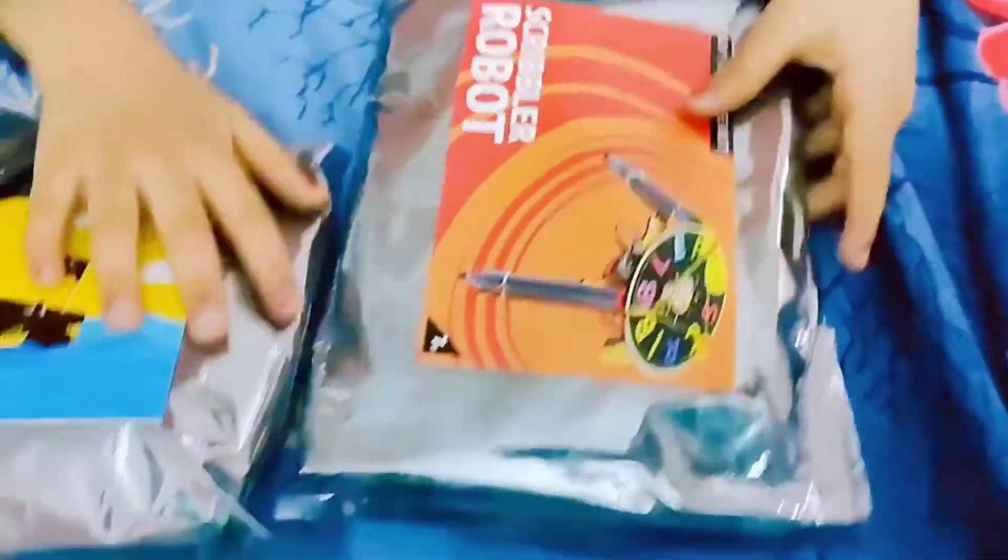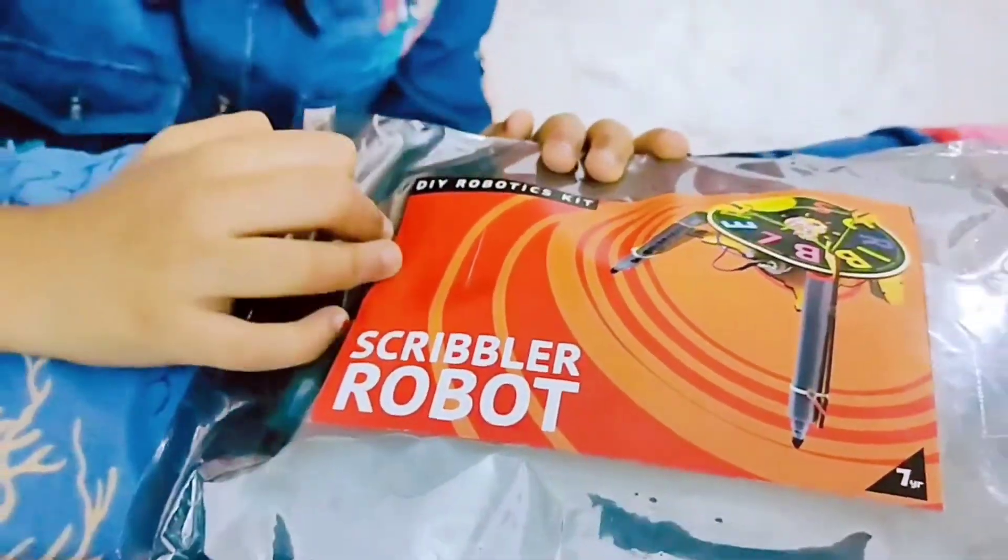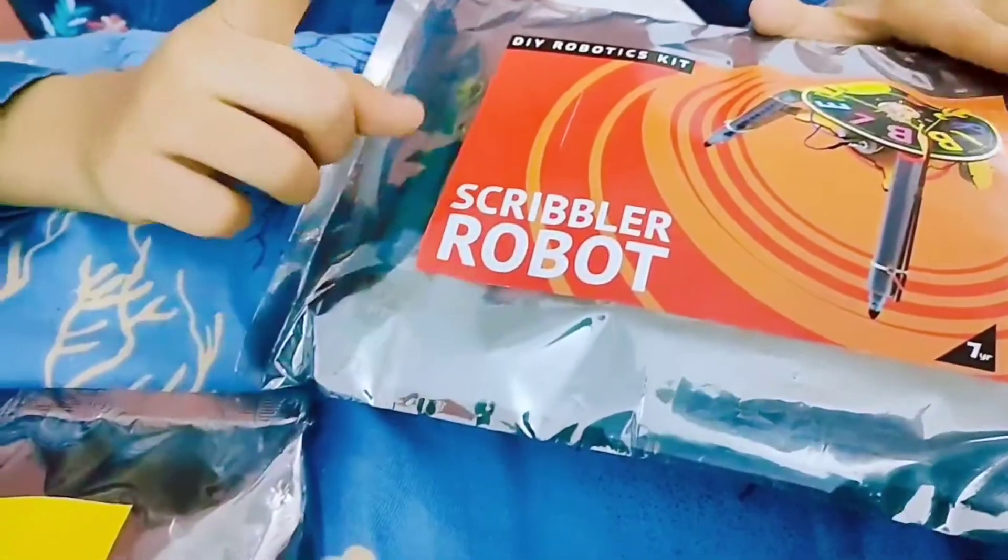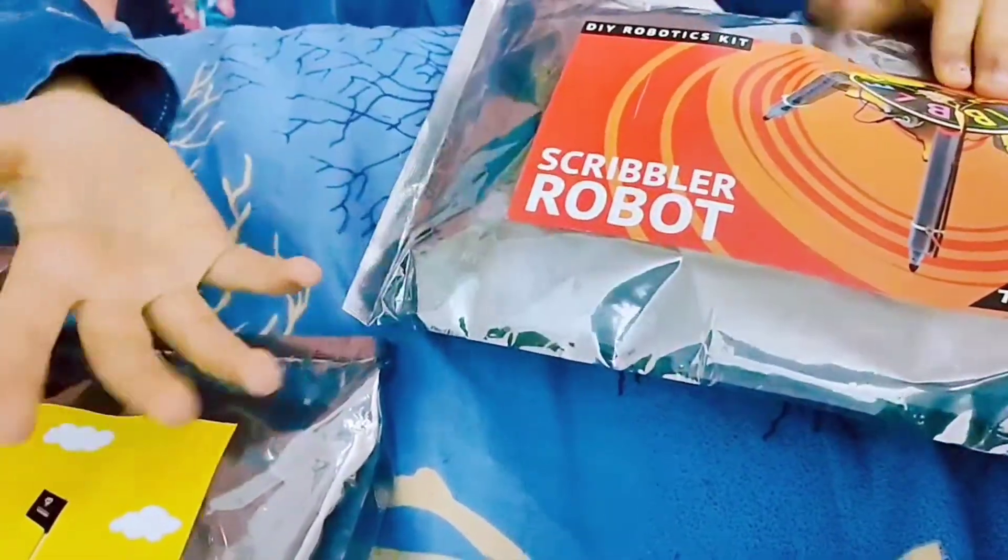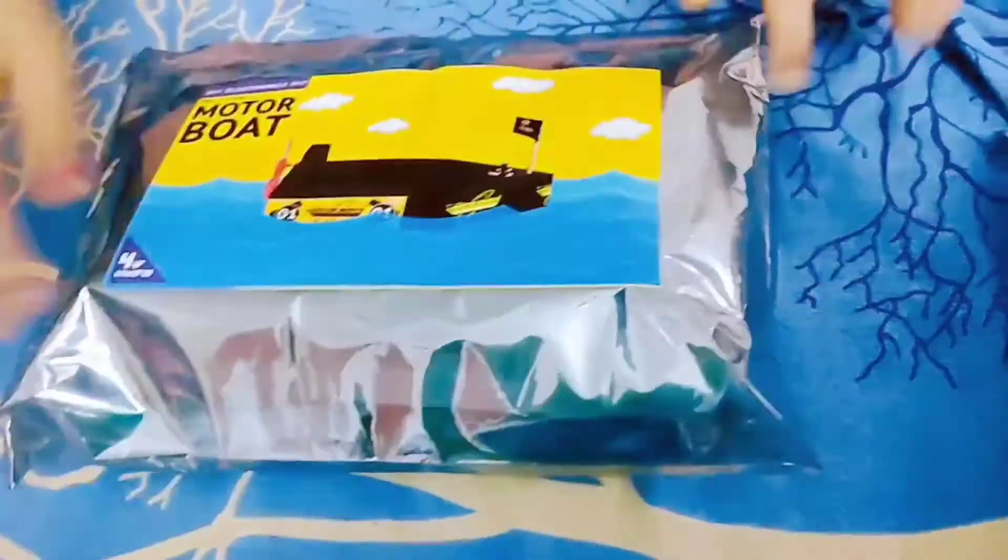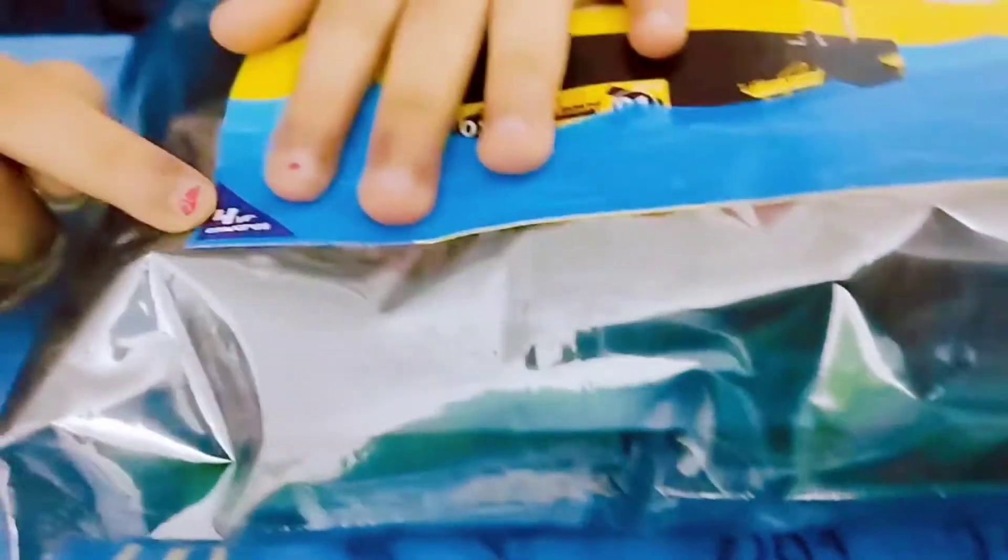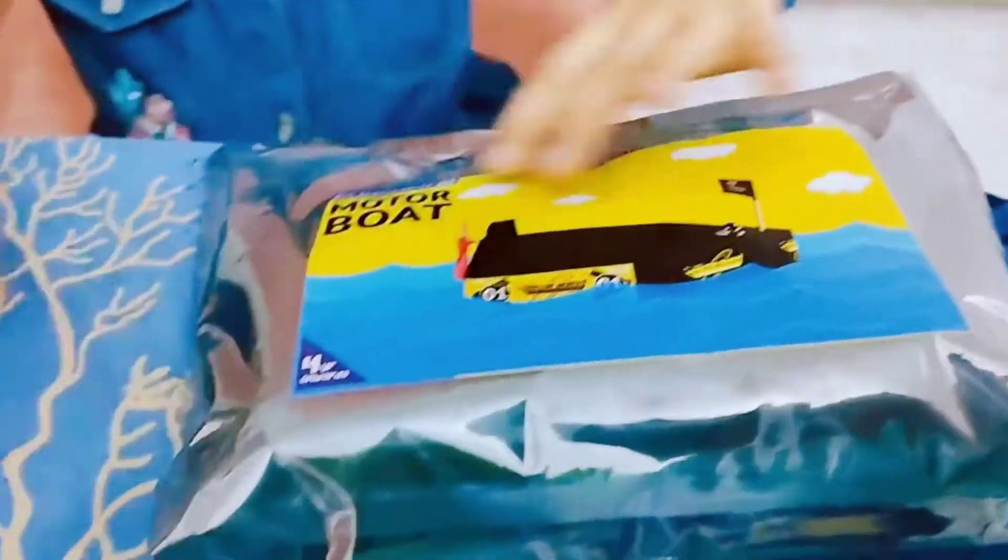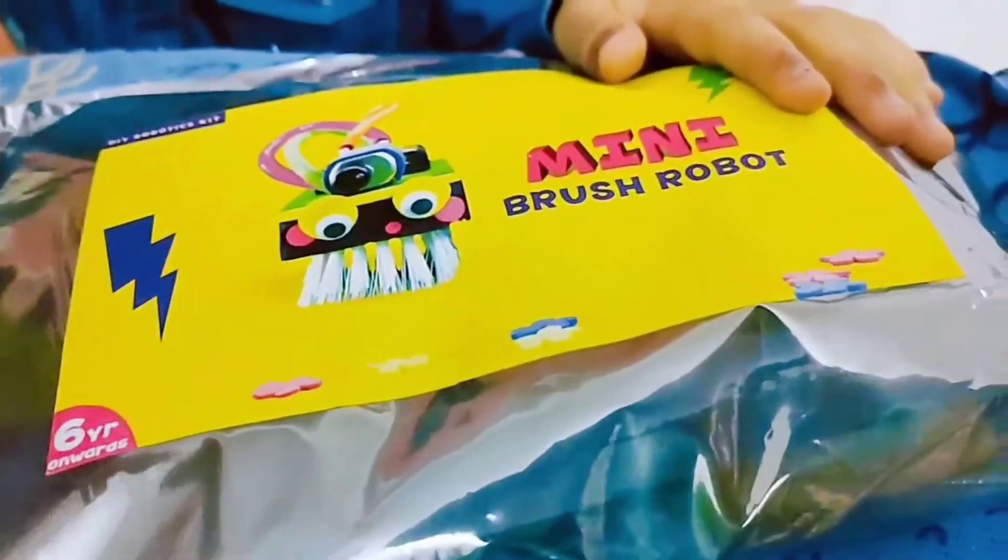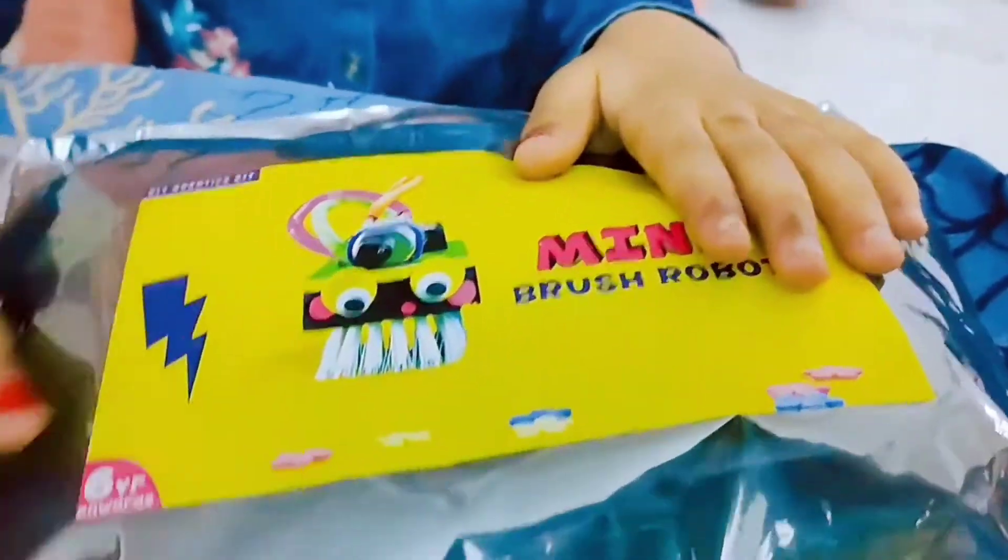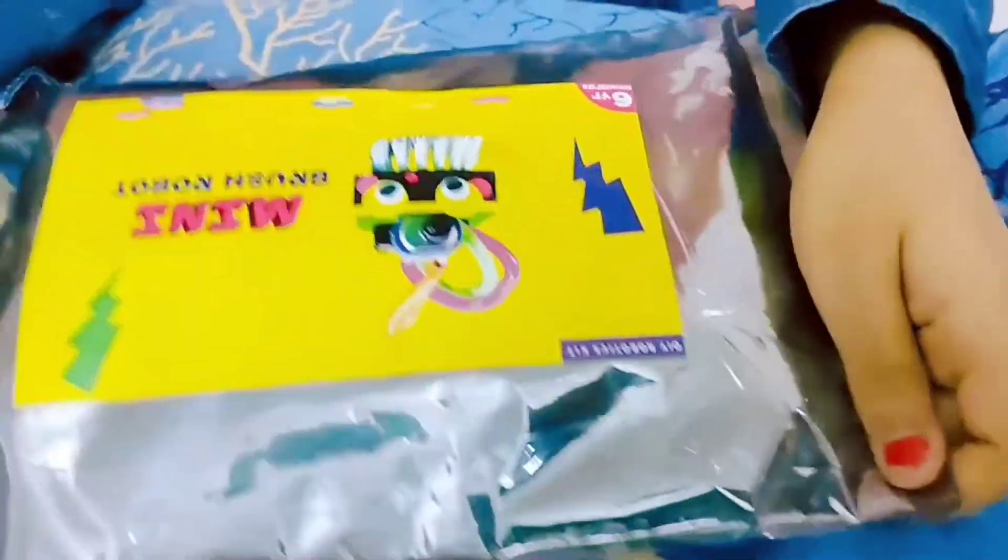Here it's running DIY robotics kit, obviously, and this is the scribbler robot. I know it looks really scribbly, but let's see. Then comes the motorboat, it's for four years onwards. Then comes this mini brush robot, this is for six years onwards. Well, I'm 10 this year so I don't have to worry.